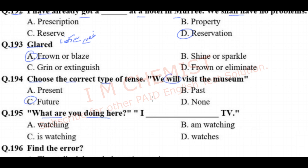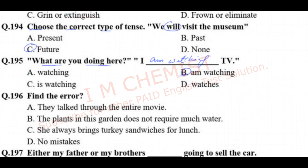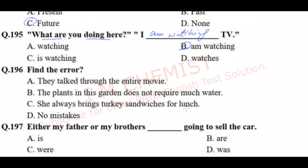Question number 195: 'What are you doing? I am watching TV.' We have to choose the correct tense. The question is in present continuous tense, so the answer should be in the same tense — 'I am watching TV.' Option B is correct.